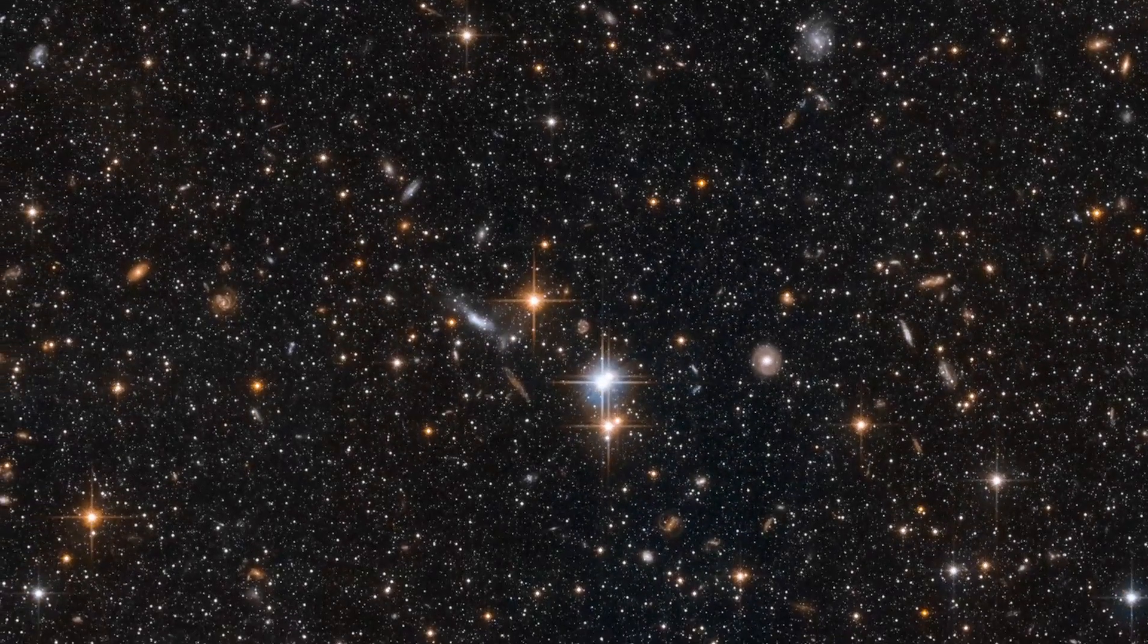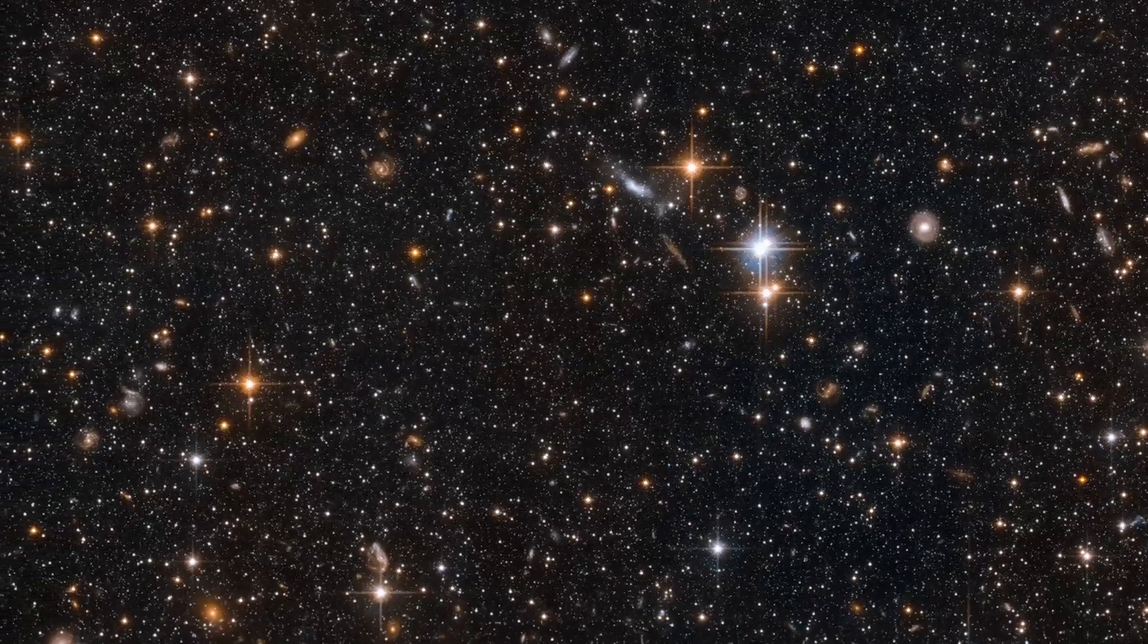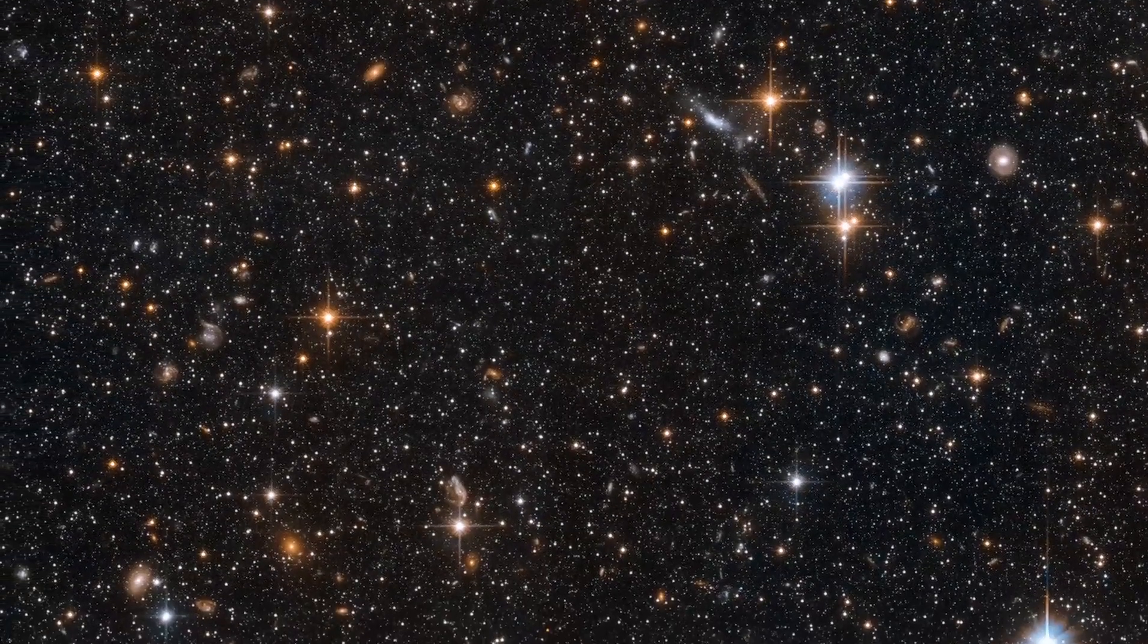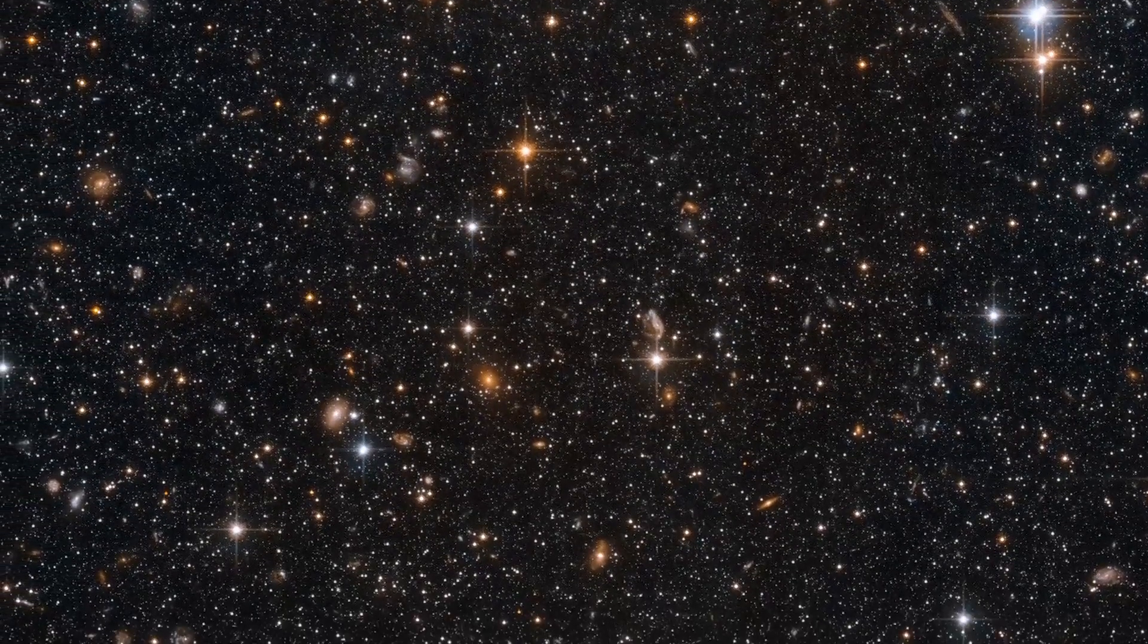Busy as these images look, we're only in the outskirts of the Andromeda galaxy here. That's because these observations were made in order to study a particular type of variable star that is common in the outer reaches of galaxies.